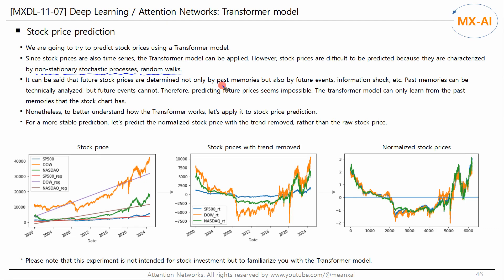It can be said that future stock prices are determined not only by past memories but also by future events, information shocks, etc. Past memories can be technically analyzed, but future events cannot. Therefore, predicting future prices seems impossible. The Transformer model can only learn from the past memories that the stock chart has. Nonetheless, to learn how the Transformer model works, let's apply it to the stock price prediction problem.